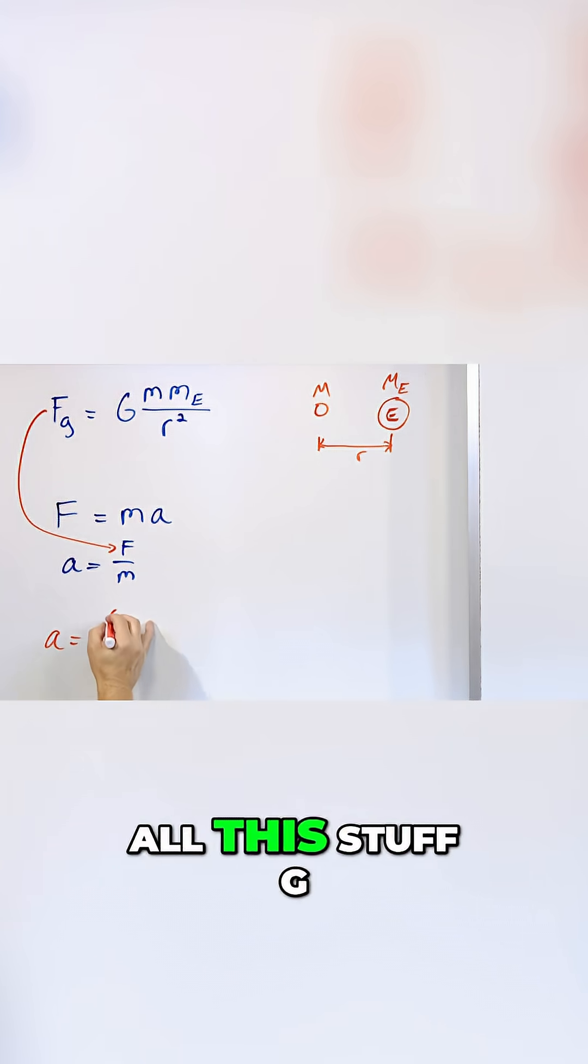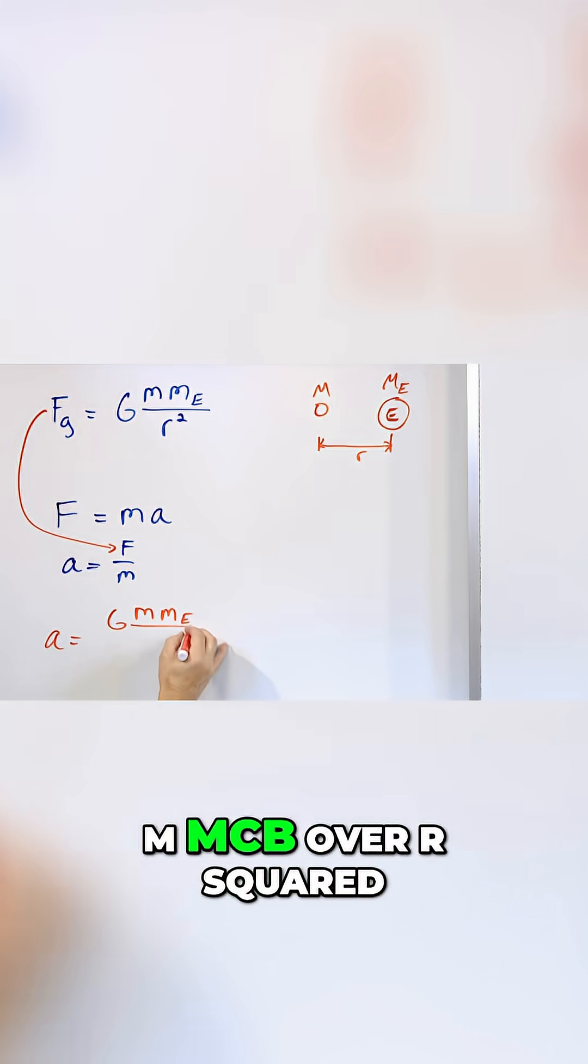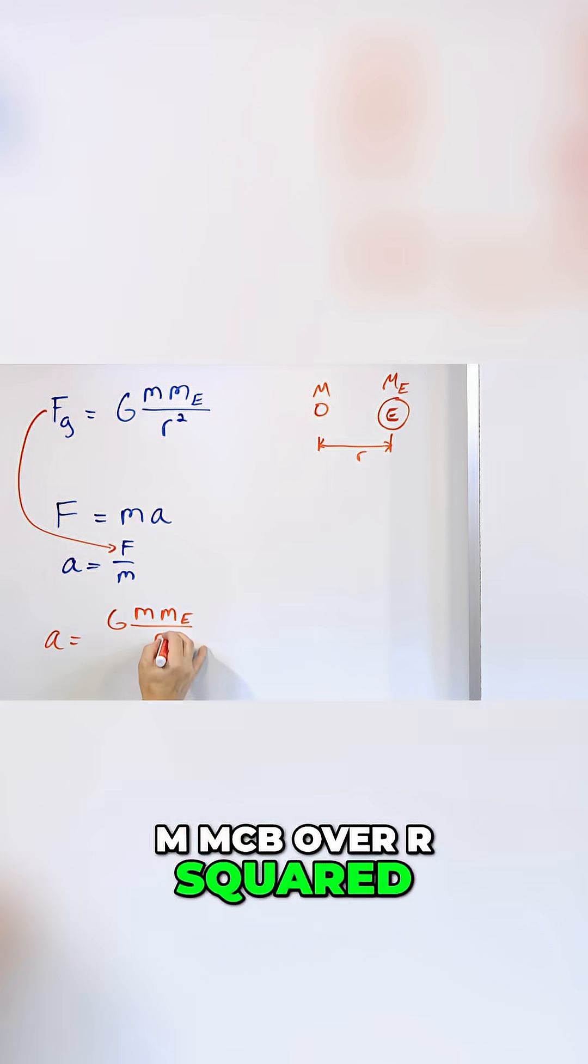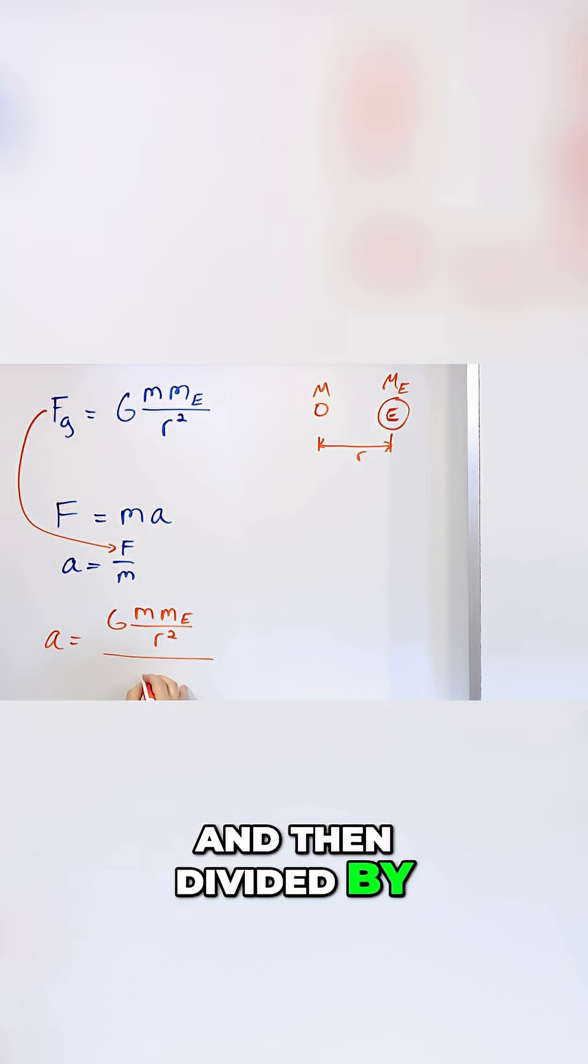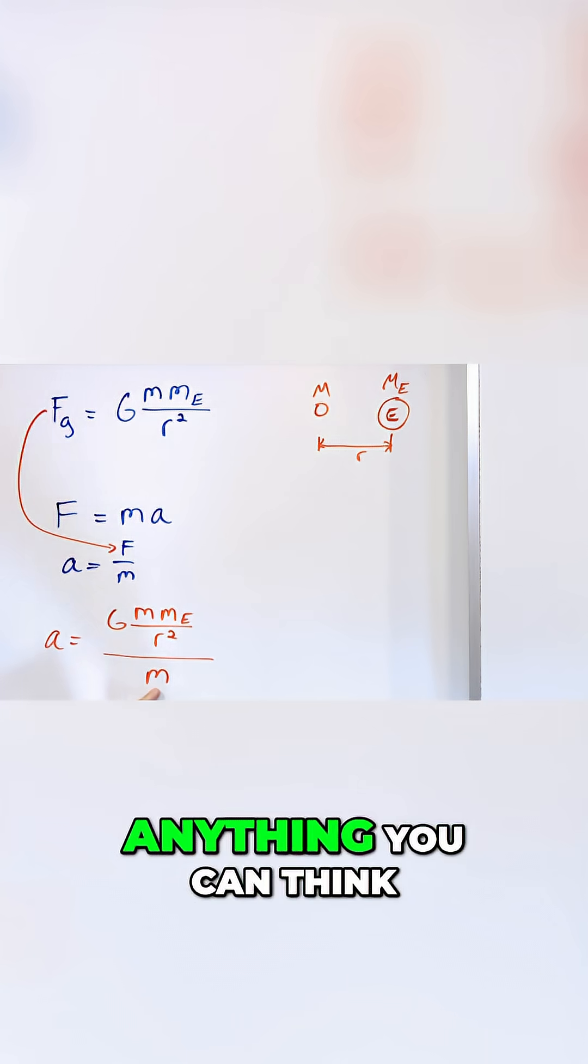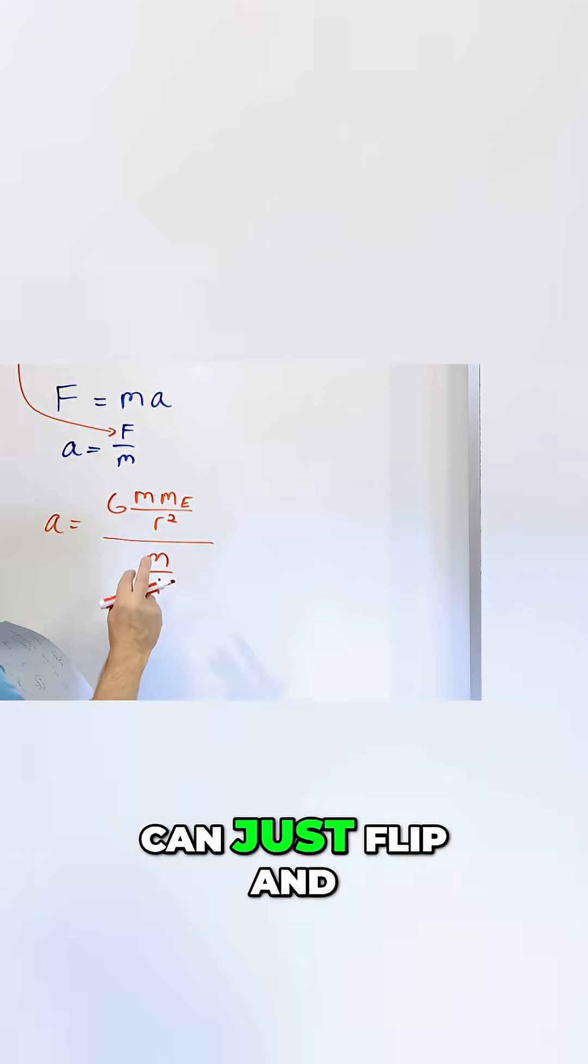The force of gravity is given by all this stuff: G times m times m sub e over r squared, and then divided by m right here. You can think of it as itself over one, so you can just flip and multiply.